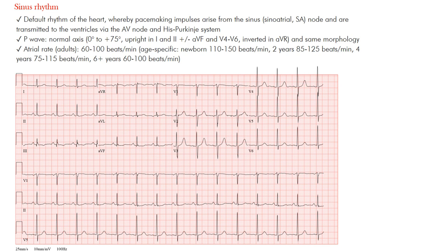Sinus rhythm is the default rhythm of the heart. The pacemaking cells — the impulses — arise from the sinus node, also called the sinoatrial or SA node; they're all the same thing. And they're transmitted to the ventricles by the AV node and the His-Purkinje system.